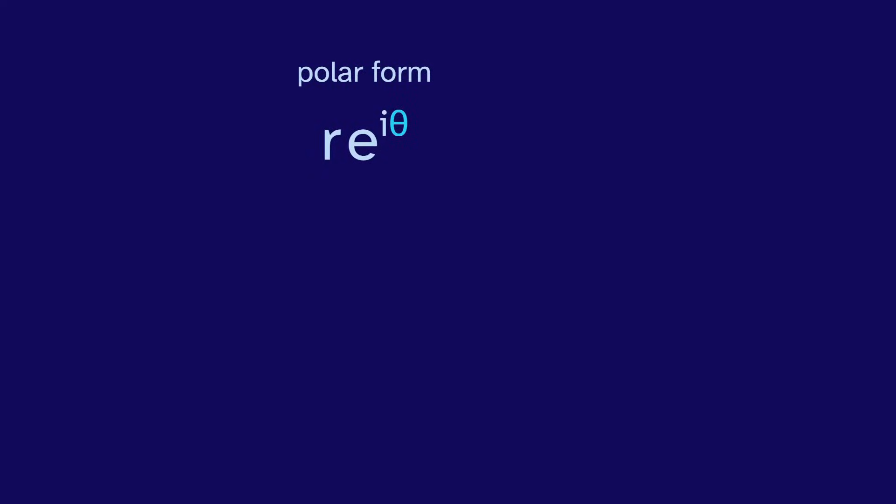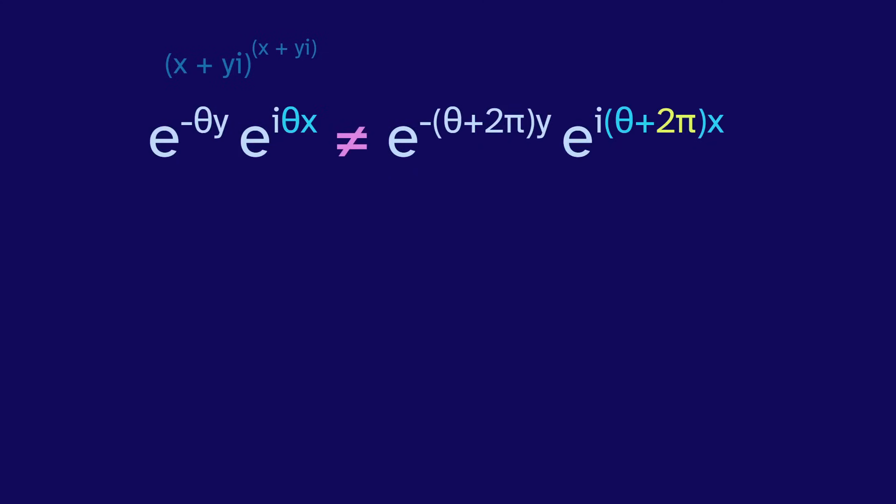Let's recall the polar form for a number, r times e to the i theta. After a lap, we get back to the same number, but the angle has increased by 2 pi. So a change in 2 pi doesn't change the number. But now recall the form for a number to its own power. Adding 2 pi could change the output, depending on what x and y are.